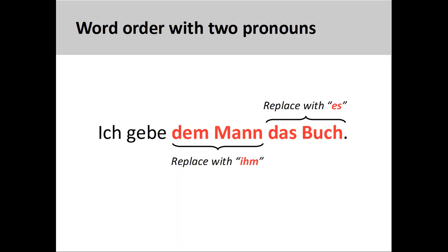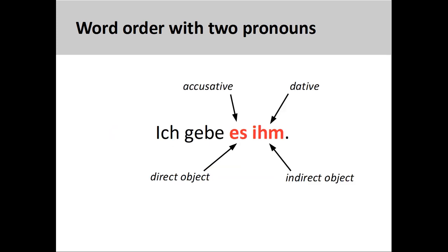But what if both nouns in the pair are replaced by pronouns? How will that change the word order? If this is the case, then the direct object must come before the indirect object, ich gebe es ihm, I give it to him. You will note that this order is the exact opposite of what we saw in the prior slide, when both objects were nouns.